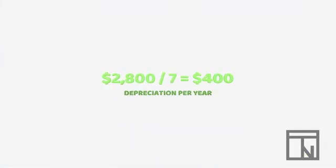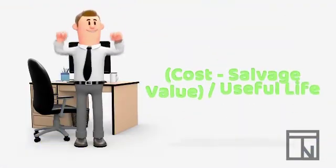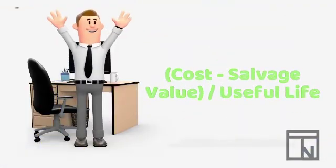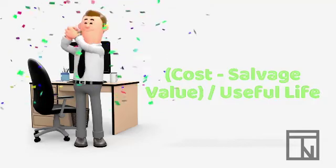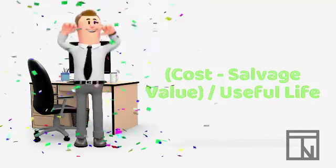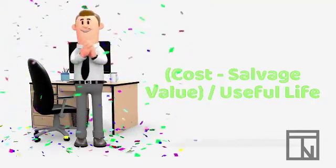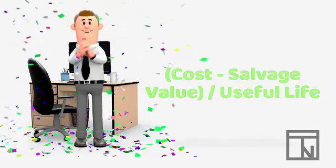Divide that by the useful life of seven years, and Bob's annual depreciation is $400 per year for seven years. See Bob? That wasn't so hard. Just remember that straight line depreciation is calculated by taking the original cost minus the salvage value and then dividing it by the useful life.